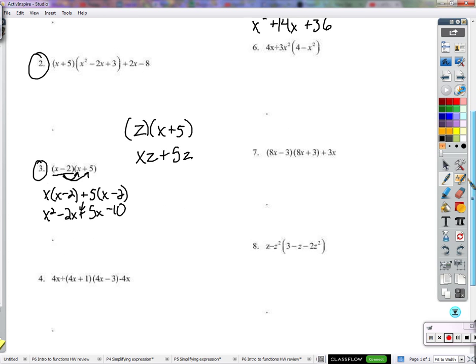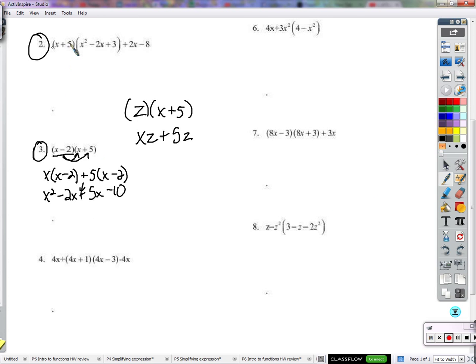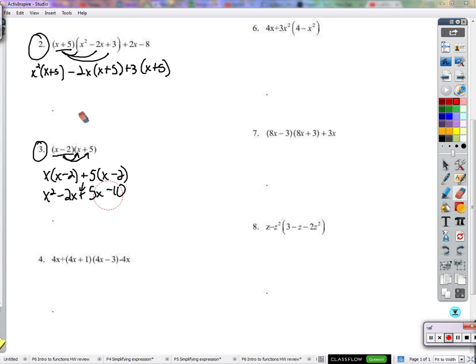For number 2, we have 2 terms times 3 terms. We can distribute the 2 terms into these 3 terms, distribute this to the 3 things there, and that's what that would look like. We could, instead, distribute the big parentheses of 3 terms to these 2 parentheses. So, we distribute this whole thing into the x and the 5. And that's what that would look like.